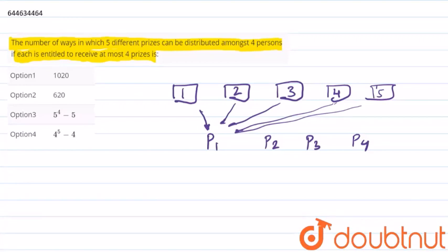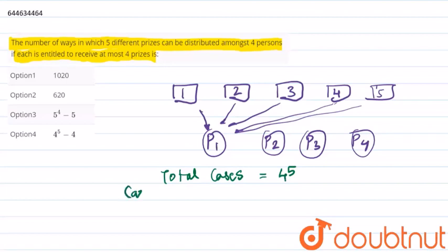So each prize goes to P1, P2, P3 or P4. So there are, as we know, total cases created can be 4 raised to 5. So we need to calculate cases...